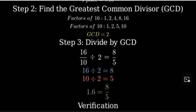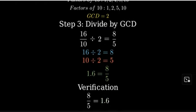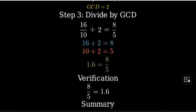To verify our answer, we can convert 8 fifths back to a decimal. 8 divided by 5 equals 1.6, confirming that our simplified fraction is correct.